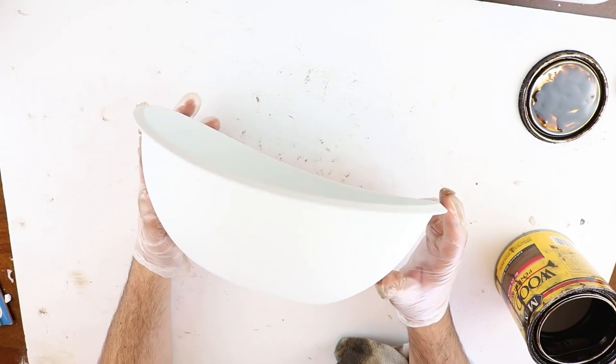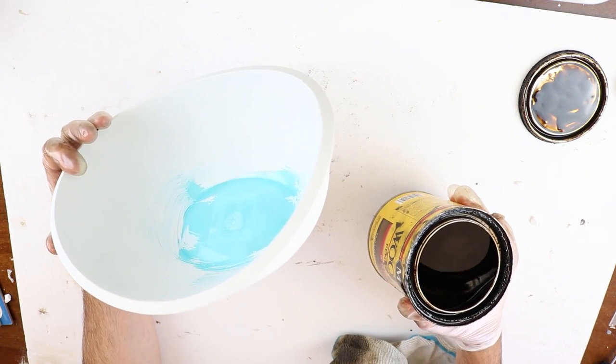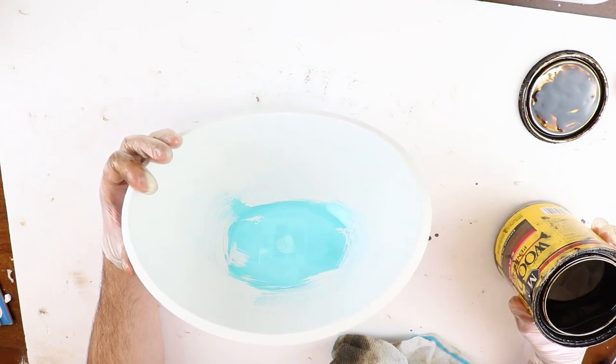Now that we have it all painted white, we're going to take this Minwax Dark Walnut stain and go over the entire bowl. This is going to give it a little more dimension.